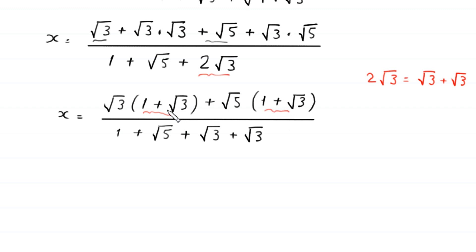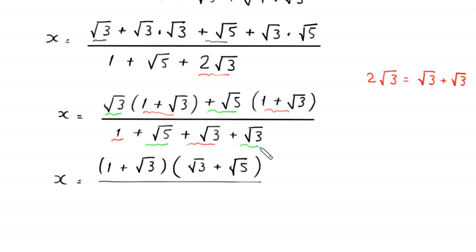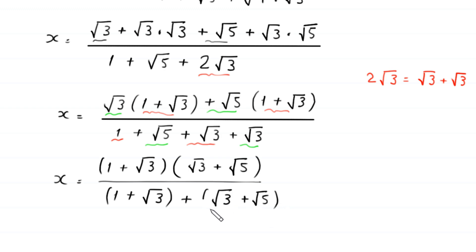Since (1 + √3) is a common factor in the numerator, we factor it out, leaving (√3 + √5) inside the bracket. So x = (1 + √3)(√3 + √5) divided by the denominator, which we group as (1 + √3) + (√3 + √5).